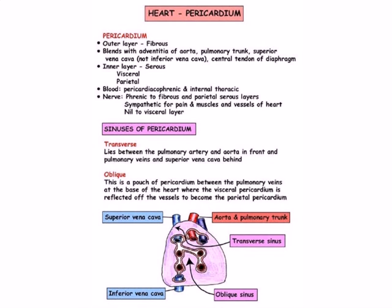Where the serous pericardium reflects between the pulmonary veins on the posterior surface or base of the heart, the fold is called the oblique sinus of the heart. This is not to be confused with the plane between the superior vena cava and pulmonary veins posteriorly and the aorta and pulmonary trunk anteriorly, which is made by the folding of the heart and is termed the transverse sinus of the heart.